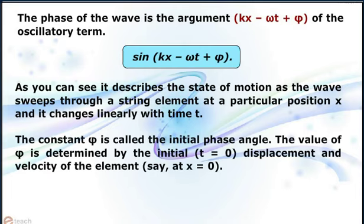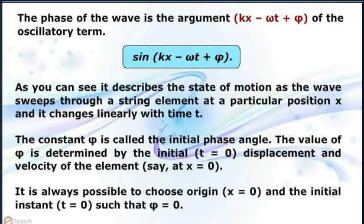The constant φ is called the initial phase angle. The value of φ is determined by the initial (t = 0) displacement and velocity of the element, say at x = 0. It is always possible to choose the origin (x = 0) and the initial instant (t = 0) such that φ = 0.